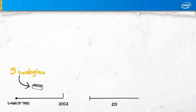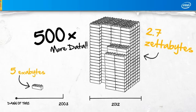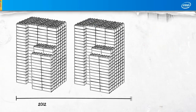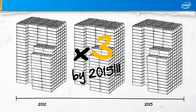In 2012, global data will grow to 2.7 zettabytes. That's 500 times more data than all data ever generated prior to 2003. And it's going to grow three times bigger than that by 2015.